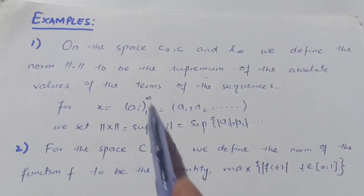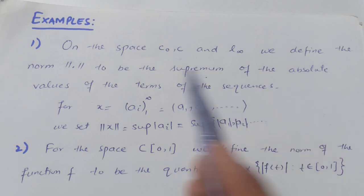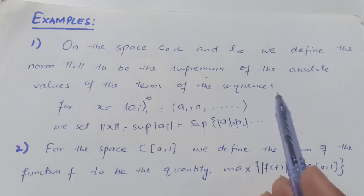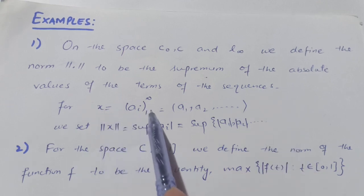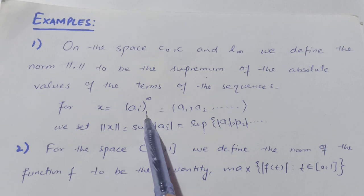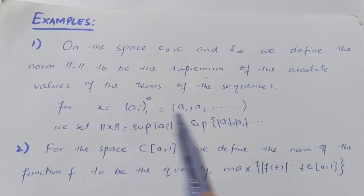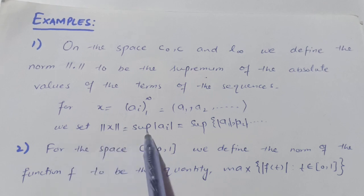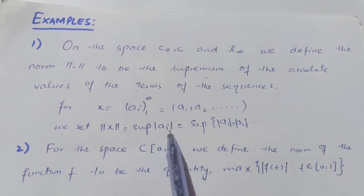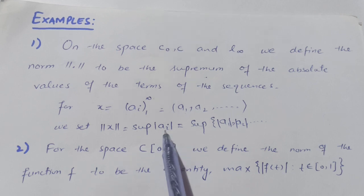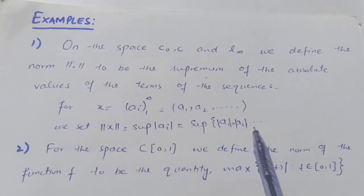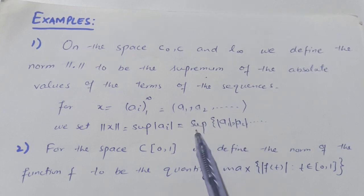Explicitly, if x = (aᵢ) where i varies from 1 to infinity — that is, x = (a₁, a₂, a₃, …) — then we define ||x|| = sup |aᵢ|, meaning we take the absolute values of all terms and then take the supremum of those values.